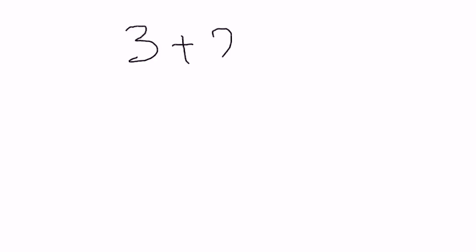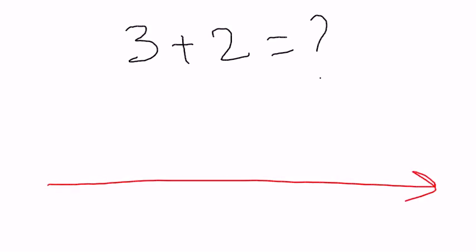Let's do some basic addition today. What is 3 plus 2 equal to? To find the answer, we'll draw a straight line and divide it into a few parts. Now let's number these parts starting with 0.